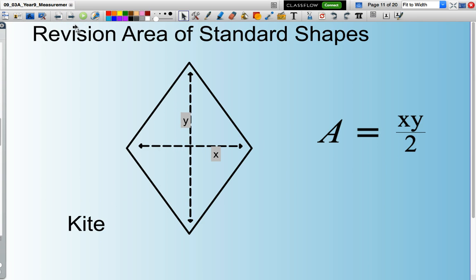The area of a kite is the multiplication of both diagonals x and y and we need to divide that by two.